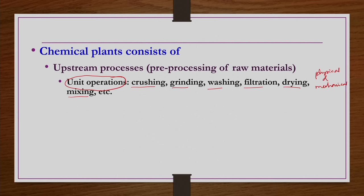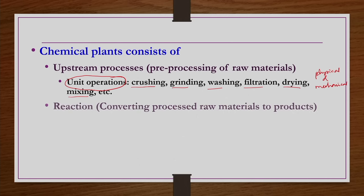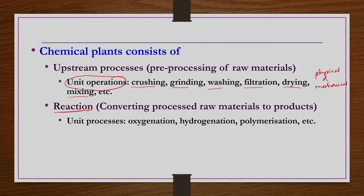After having the steps of raw material processing, assume you have a purified raw material. You can then convert processed raw materials to products by allowing them to undergo some kind of chemical reactions. In this step, chemical changes are occurring. There are a number of chemical changes possible, such as oxygenation, hydrogenation, polymerization, sulfonation, nitration, dehydration, and several other types of reactions. All of them we call unit processes.